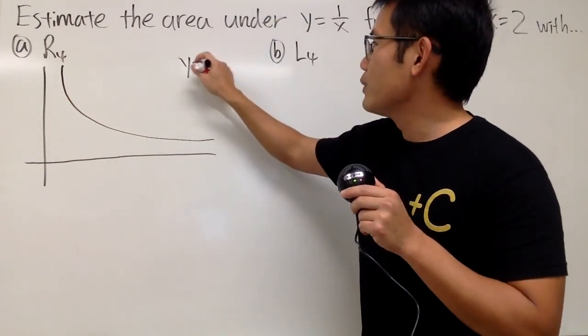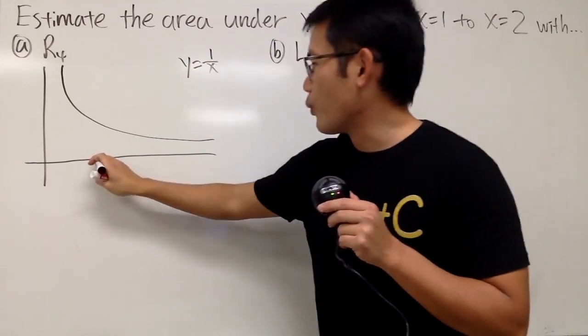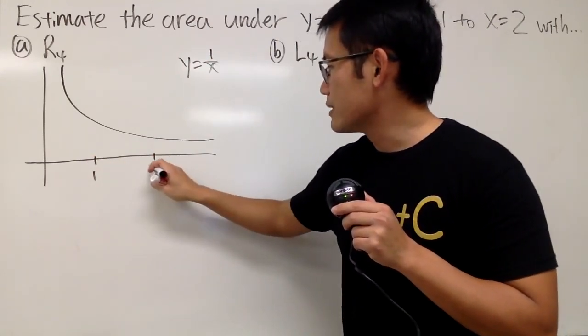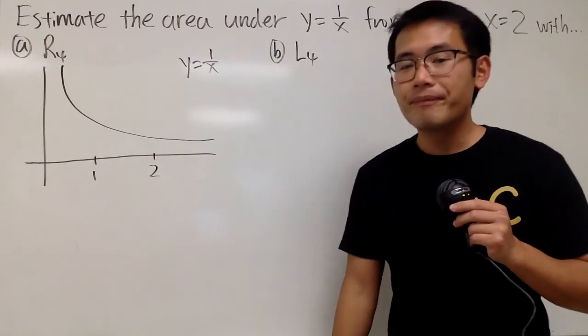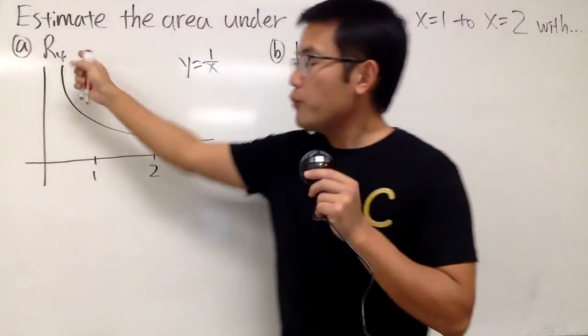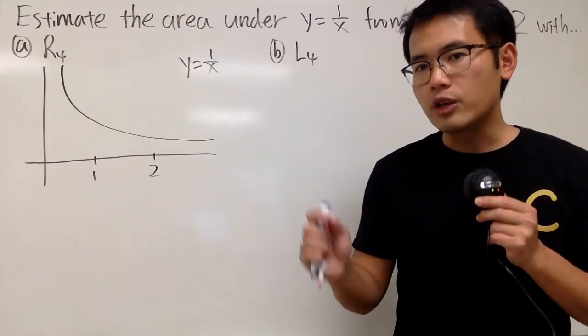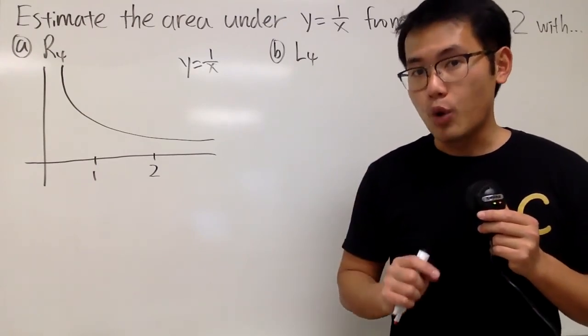So first of all, y equals 1 over x, and we are going from 1 to 2. So let's say it's right here to there. Now, R4 means we are going to use 4 equal width rectangles, and the rectangles have to be at the right endpoint.